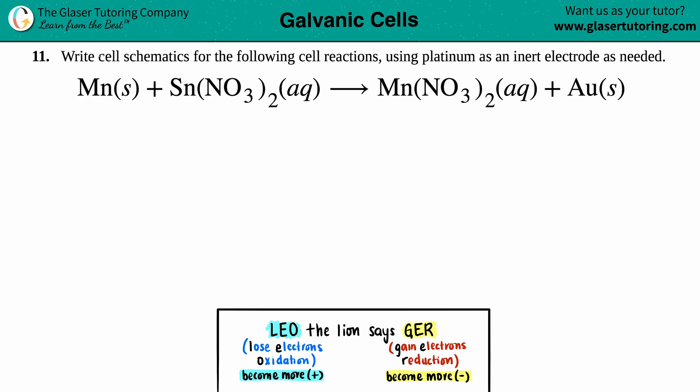Number 11. Write cell schematics for the following cell reactions using platinum as an inert electrode as needed. And then we have the balanced equation Mn solid plus Sn(NO3)2 aqueous yields Mn(NO3)2 aqueous plus Au solid. So we have to draw a cell schematic from this balanced equation.